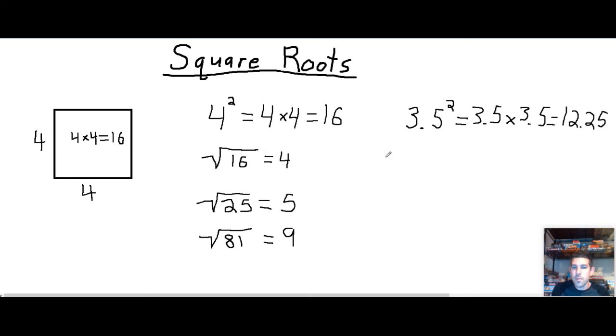So 12.25 is our answer here, meaning 3.5 squared gives us 12.25. So if we were to go backwards, we could say the square root of 12.25, what number times itself will give you this? Well, we already know we did 3.5. So the square root of 12.25 is 3.5. Now, I don't expect you to know that off the top of your head. No one really has that times table memorized.